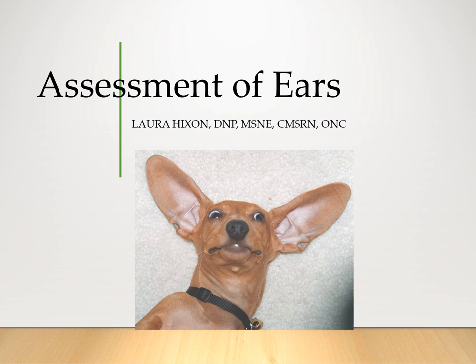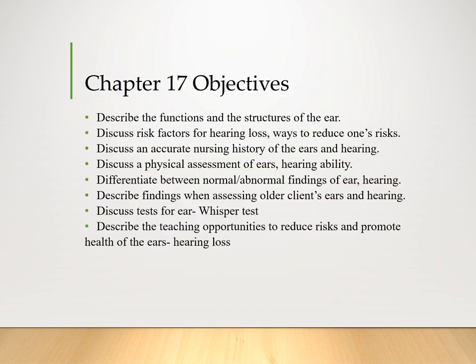Today we are going to discuss the ear assessment. The Chapter 17 objectives for assessing the ear include describing functions and structures of the ear, discussing risk factors for hearing loss and how to reduce one's risk, discussing an accurate nursing history of the ears and hearing, and discussing a physical assessment of the ears and hearing ability. You would differentiate between normal and abnormal findings, assess an older adult client's hearing, discuss tests for the ear including the whisper test, and any teaching opportunities to reduce risk and promote health of the ears.